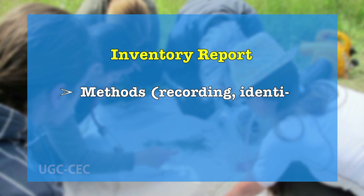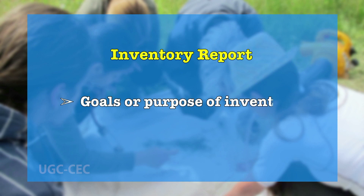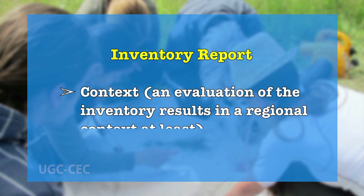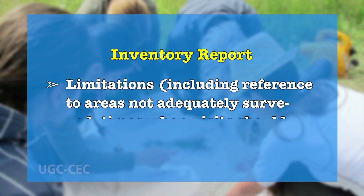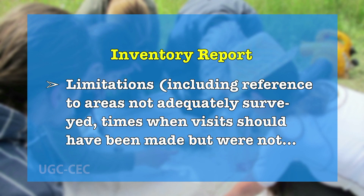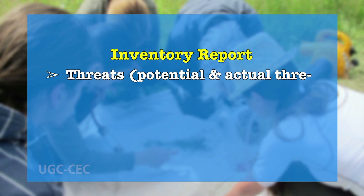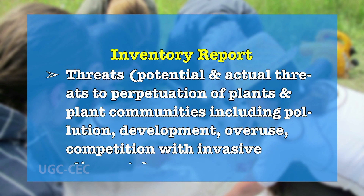Among the very important items to be included in the inventory report are: 1. Methods that include recording, identification, as well as a precise definition of the area. 2. Goals or purpose of the inventory work. 3. Context and evaluation of the inventory results in a regional context. 4. Limitations including reference to areas not adequately surveyed, times when visits should have been made but were not, and unusual conditions affecting floral display such as drought. 5. Threats, including potential and actual threats to perpetuation of plants and plant communities, including pollution, development, overuse, and competition with invasive aliens.